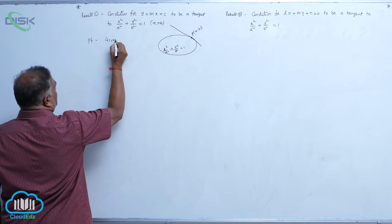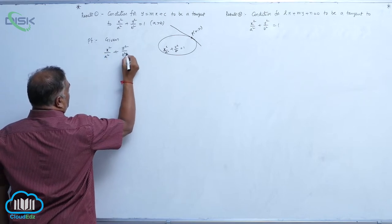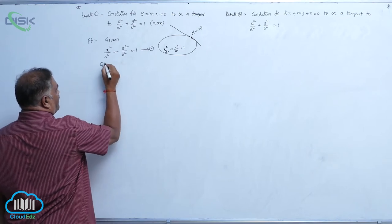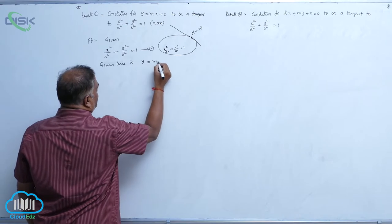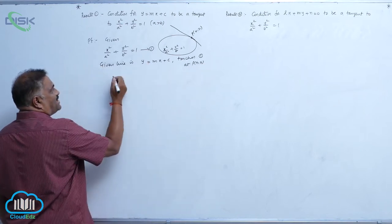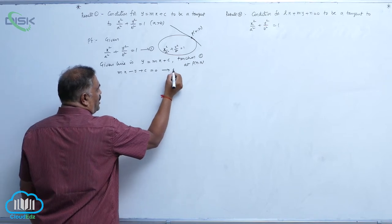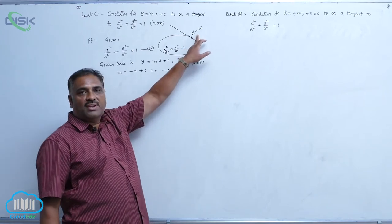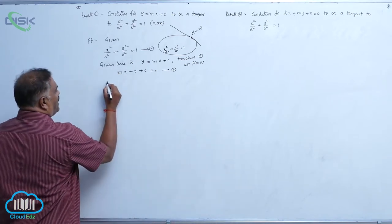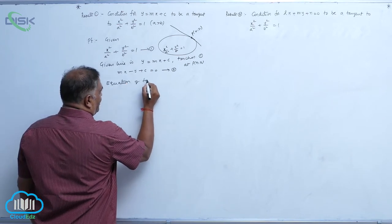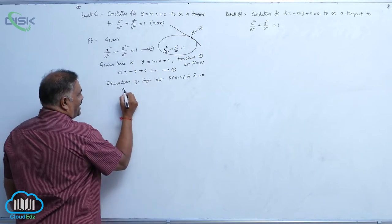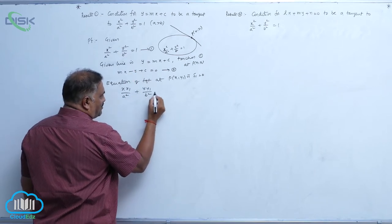Given the standard equation x²/a² + y²/b² = 1, and the given line y = mx + c touches it at P(x1, y1). We can rewrite the line as mx - y + c = 0, call this equation 2. Since P(x1, y1) is a point on the ellipse, we can write the tangent in general form S1 = 0. The equation of tangent at P(x1, y1) is: xx1/a² + yy1/b² - 1 = 0.